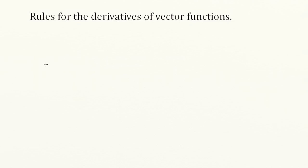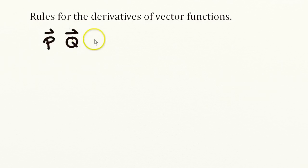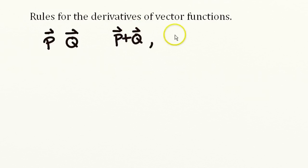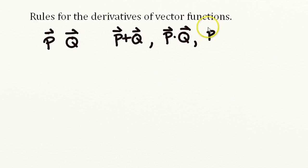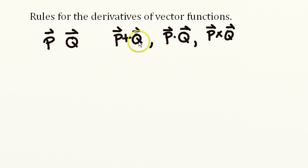Let's review the rules for taking the derivatives of vector functions. If we have two vectors, we'll call them P and Q, they can be combined in different ways: we could add them, we could take the dot product of the two, and we could take the cross product of the two. I'm going to write down what happens when you take the derivative with respect to some variable of the sum, the dot product, and the cross product of these two vectors.